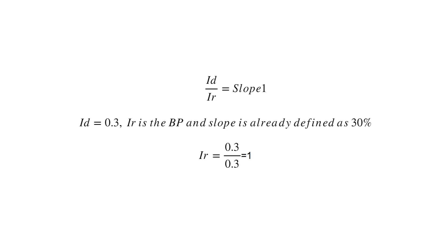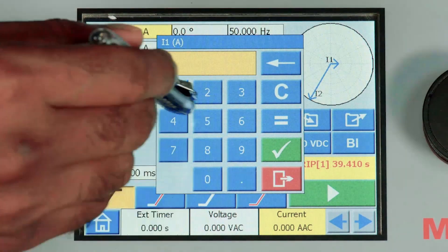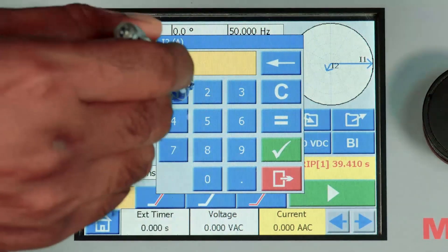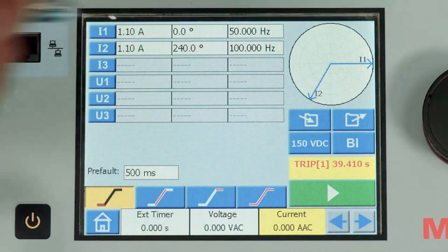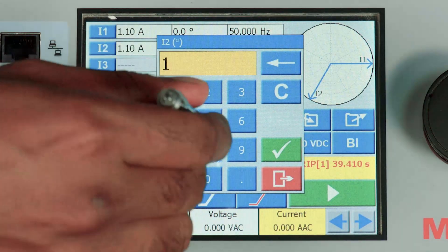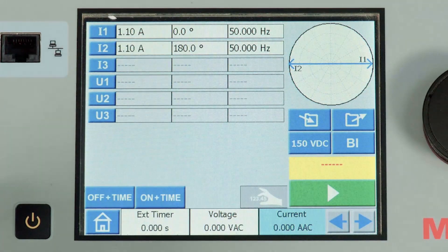Between 1 per unit and 1.5 per unit, the slope is 30%. To verify the same, let us inject 1.1 angle 0 in HV and 1.1 angle 180 degree in LV. The current value is chosen more than the initial point. So let me inject this value.